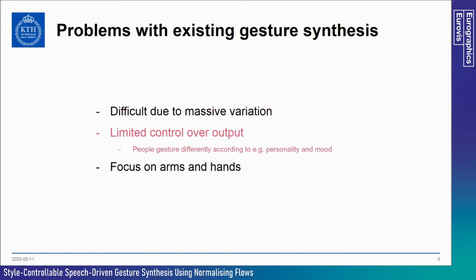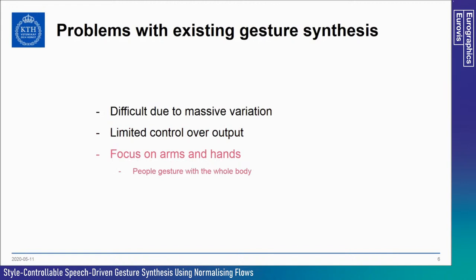Rule-based or deterministic models fail to capture this variation and the output tends to be very repetitive and unnatural. Another problem is the limited control over the output — instead of getting one generic gesture, you may want to control style aspects to portray a certain personality or mood. Also, previous work focused only on arms and hands, while in this paper we take a holistic approach and generate complete body motion including stance shifts and small steps.